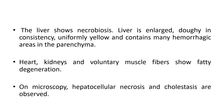The liver directly targets, showing necrobiosis. The heart, kidneys, and voluntary muscle fibers may show fatty degeneration. On microscopy, hepatocellular necrosis and cholestasis are observed. These are the key autopsy findings in phosphorus poisoning.